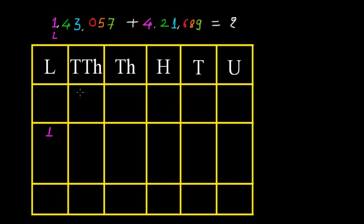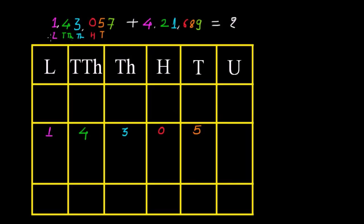Then we have 4 at the 10,000 place. We have 3 at the 1,000 place. And then we have 0 at the 100 place, so we must write 0 like that. The tens place is 5, so I must write 5 below. And then we have the unit place, where we have 7.